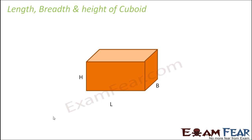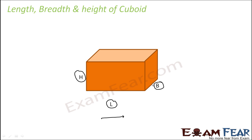Let's understand cuboid. Before that, let's understand the concept of length, breadth, and height. This is the convention — if you have a cuboid given, the straight line that is almost perpendicular to your x-axis will be height. The line along the x-axis is considered to be length, and the other line is considered to be breadth.